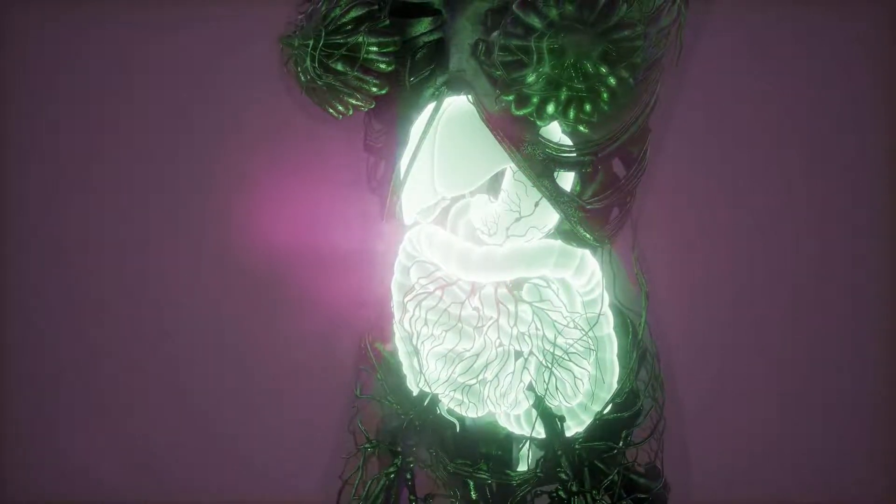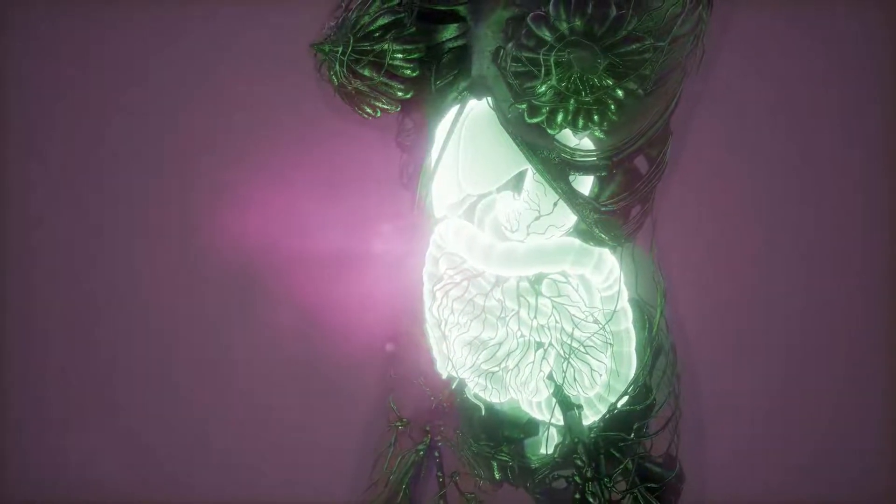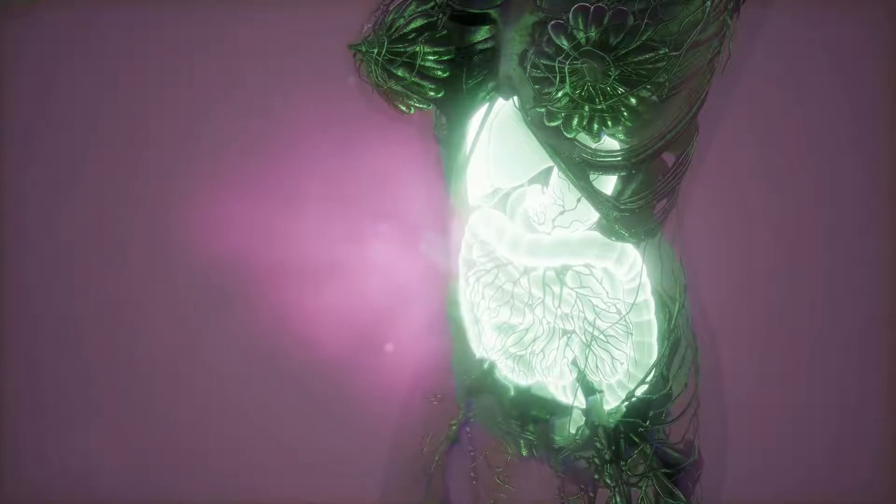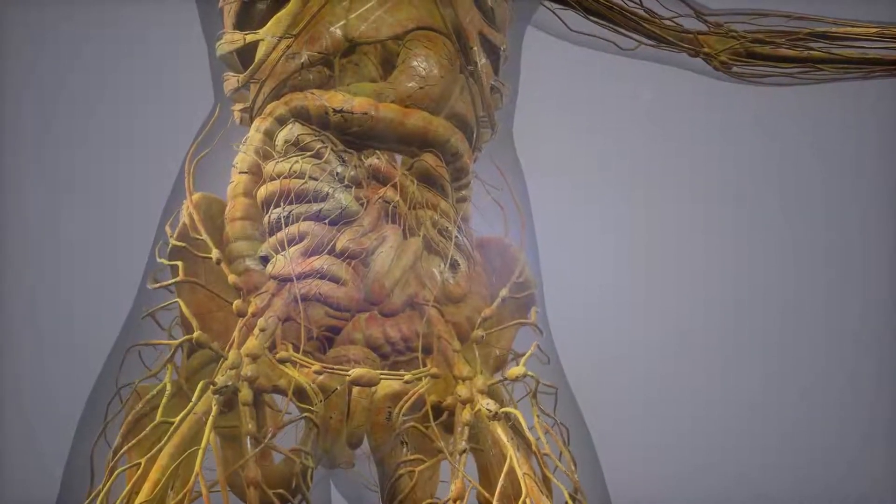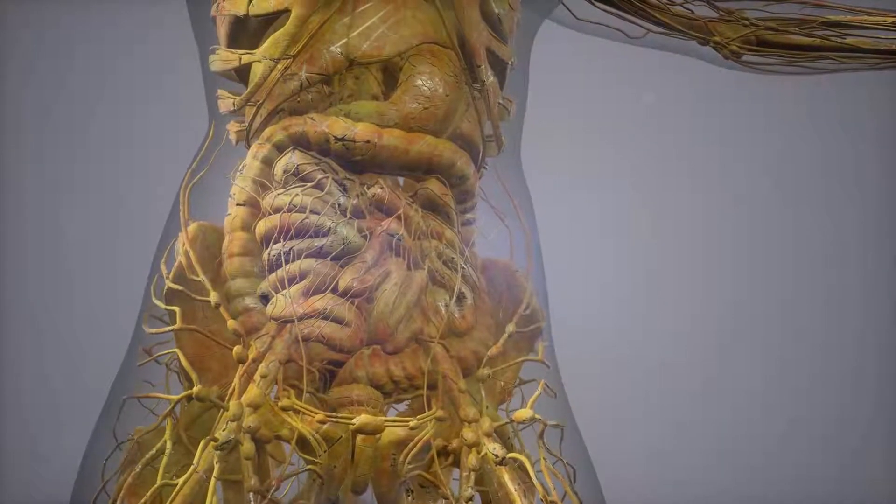However, some organs inside the abdomen are vulnerable to damage. The kidneys, for example, can be injured by a blow to the lower back, which is one reason uniforms for rough sports often include extra padding in the lower back.